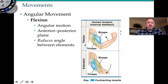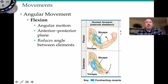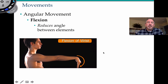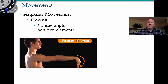Angular movement can be flexion or extension. Flexion is an angular motion — it goes in the anterior to posterior plane and reduces the angle between elements. If your arm was extended at about 180 degrees and flexion occurs, the flexion draws the forearm closer, decreasing the angle at the elbow. The biceps contracts while the triceps relaxes, causing extension of the forearm when the triceps contracts. You can have flexion of the wrist, which decreases the angle right there.